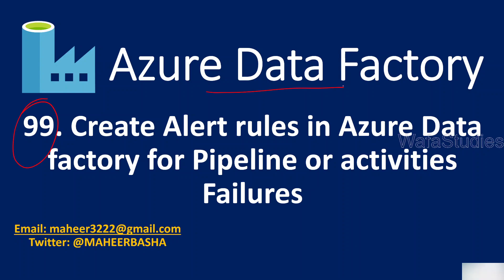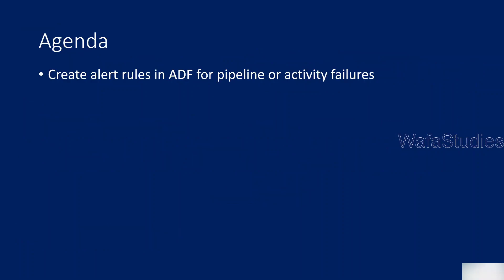In this video, we are going to discuss how to create alert rules in Azure Data Factory to monitor our pipeline runs or activity runs. There is something called alert rules inside the Monitor tab where we can create an alert rule that sends notifications — it can be email notification, SMS notification, or any other notification type you configure.